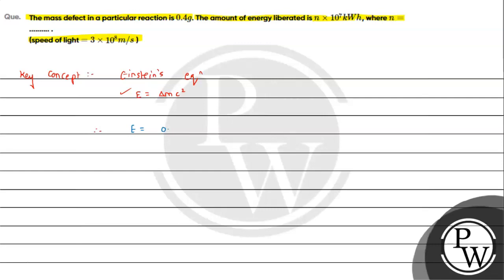So energy will be equal to delta mc square of 0.4 gram that is 0.4 times 10 raised to minus 3 kg into c square is 3 into 10 raised to 8, that is 9 into 10 raised to 16.